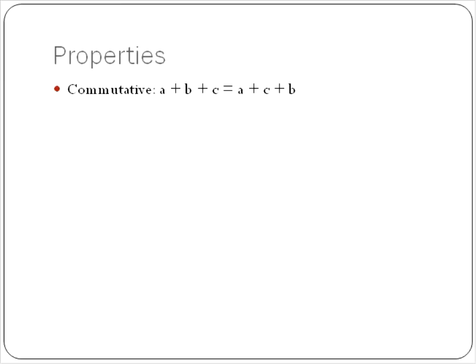The first property, the commutative property, is shown like this. A plus B plus C is the same as saying A plus C plus B. Now, that's kind of hard to remember unless we have a special way to remember. For me, I remember the word commute.